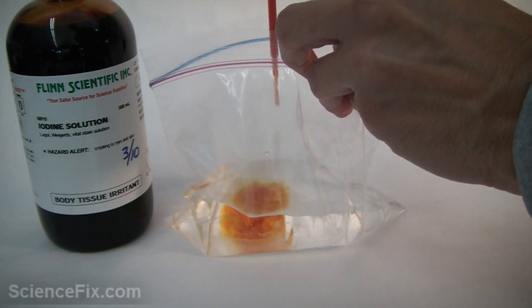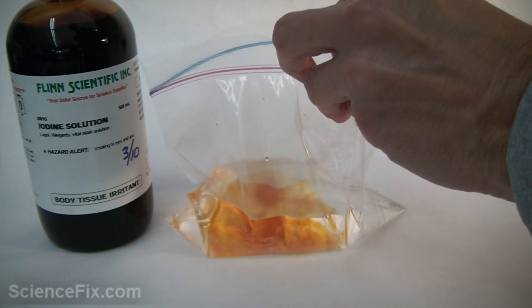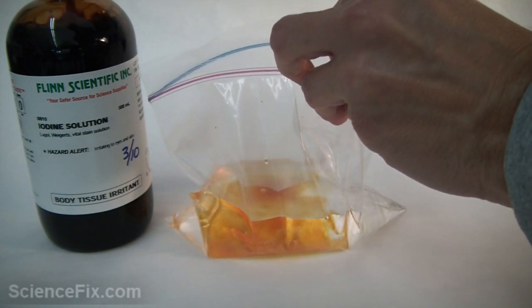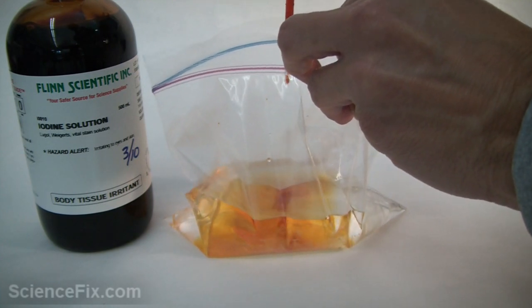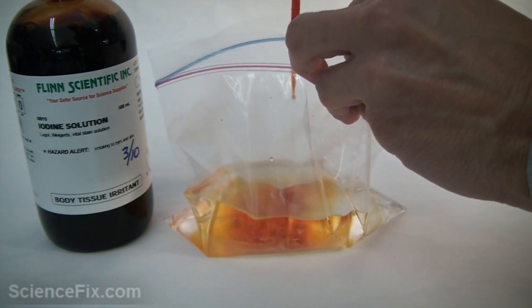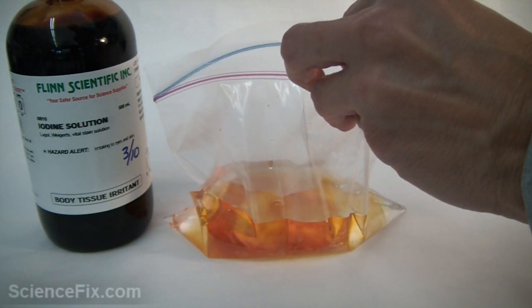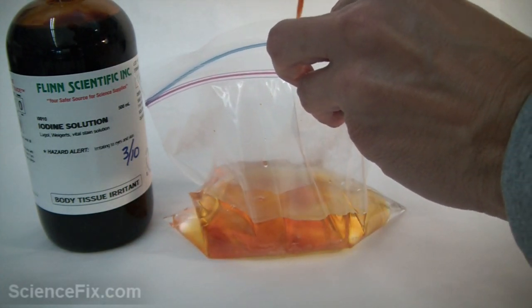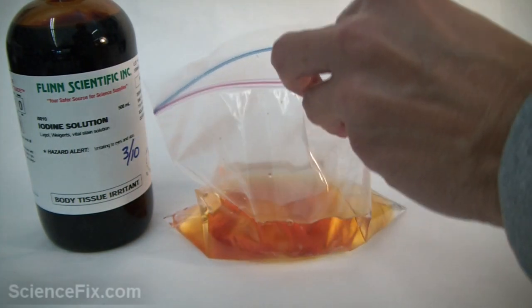We are going to put enough iodine solution so that the water turns a darkish yellowish to slightly light brown color. You can't have too little because this demonstration won't work with too little iodine, and you don't want to use too much because that would be a waste.